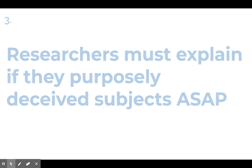Third: researchers must explain if they purposely deceived subjects as soon as possible after the study is done. If an experimenter led you astray — told you one thing when the actual purpose was totally different — they need to debrief you after the survey or experiment and say we were actually doing this, and explain the reason why they gave you misleading information or tricked you.